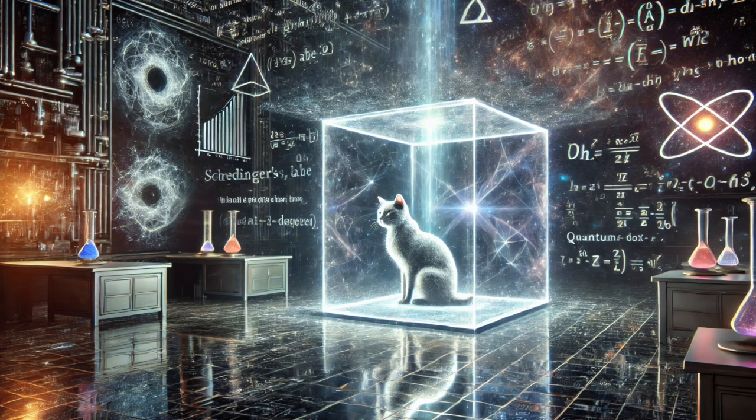Right. The cat in the box. It's meant to show just how weird all this is, right? Exactly. He imagines this cat in a box with a device that's triggered by a quantum event, something like an atom decaying. If the atom decays, poison is released, and the cat dies. If not, the cat lives. But since that trigger is based on a quantum event, we can't know for sure if the atom decayed or not until we open the box. So before we look, the cat is both alive and dead at the same time. That's the paradox.